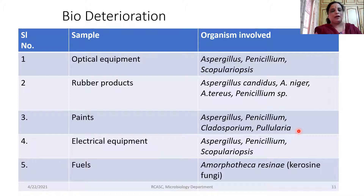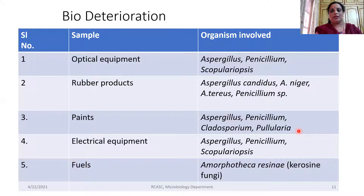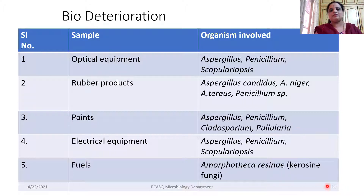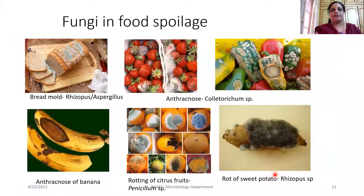Electrical equipment and wires sometimes get fungal growth even inside the refrigerator. Likewise, fuel — especially kerosene — also gets deteriorated. Please make a note: it is Amorphotheca resinae, an anamorphic fungus, which has the ability of deteriorating kerosene.